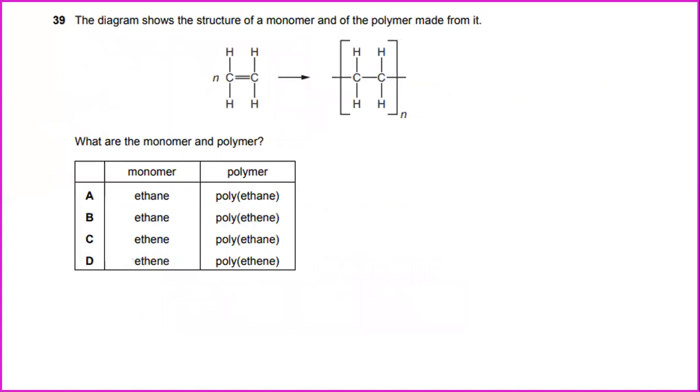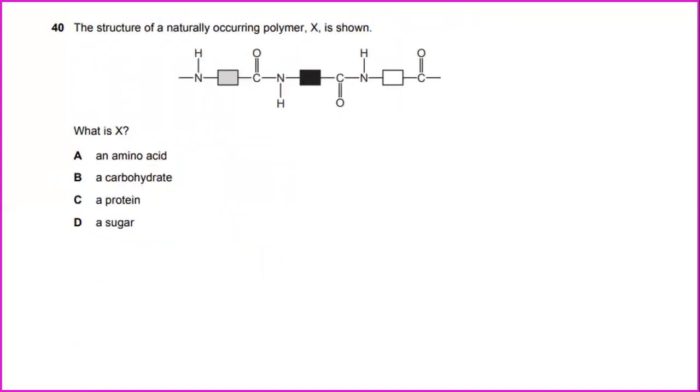The diagram shows the structure of a monomer and of the polymer made from it. What are the monomer and polymer? In this diagram, it's referring to monomer is ethene and the polymer is polyethene. The structure of a naturally occurring polymer X is shown. What is X? X is a protein.